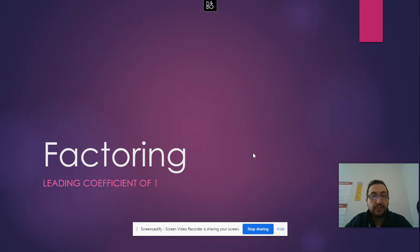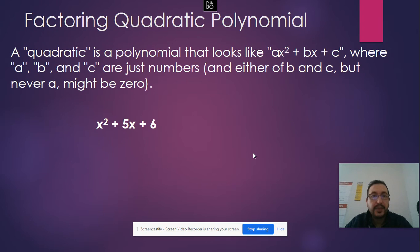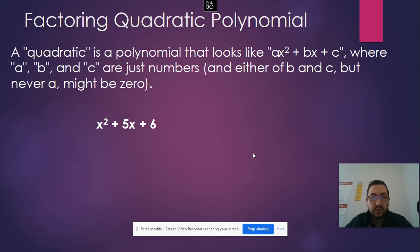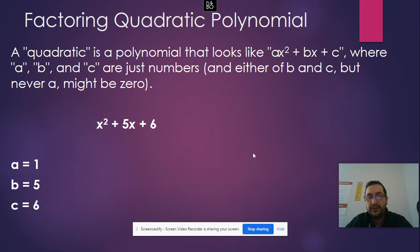We're going to factor trinomials when the leading coefficient is 1. A quadratic is a polynomial that looks like ax squared plus bx plus c, where a, b, and c are just numbers, and either b and c could be 0, but a can never be 0. In this example, x squared plus 5x plus 6, a is 1, b is 5, and c is 6. Since a is 1, the leading coefficient is 1, and that is how we're going to factor.